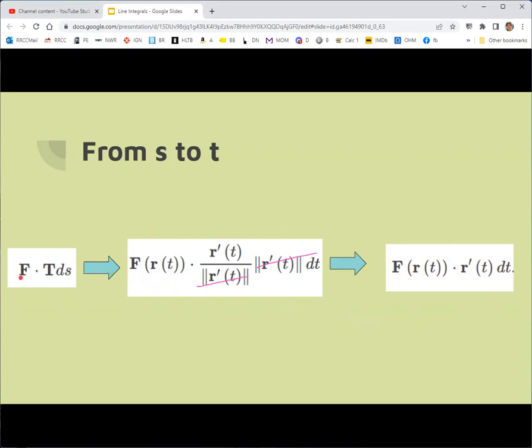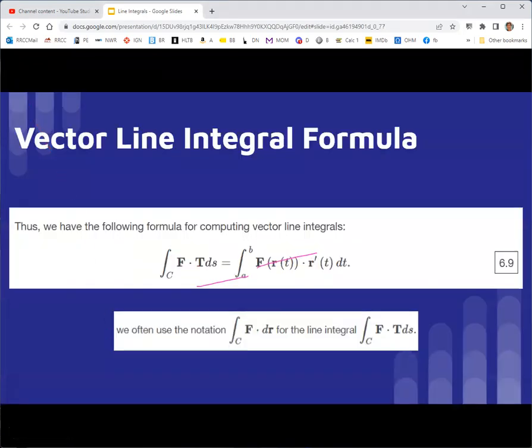So while it says f dot t in the formulas, what you're actually doing the dot product with is f and r prime. So you may see it written like this for vector line integral, but this is how we would actually compute it. In fact, you may also see it written like this, f dot dr, because people do want to remember to do the dot product of f with r prime. And so dr kind of reminds them of dr dt. And so f dot dr is a helpful reminder that it's the dot product of f with r prime.